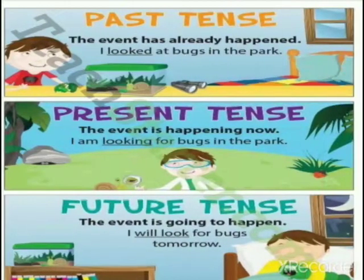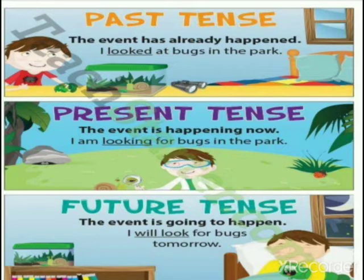We have three kinds of tenses: present, past, and future. Present — jo present mein hai, jo event chal raha hai, jo chalta hai.